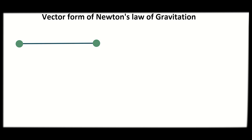Hello friends, in this video we will try the vector formula of Newton's law of gravitation. If we look at two masses, we will assume m1 and m2, and we will separate the r distance. We will use the vector formula for this example.